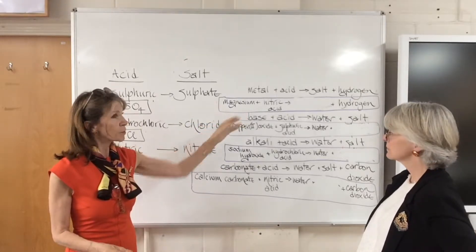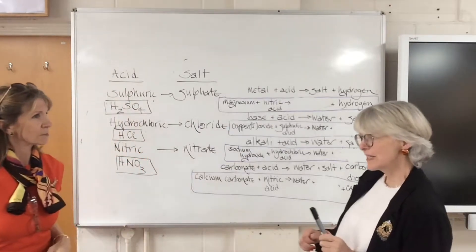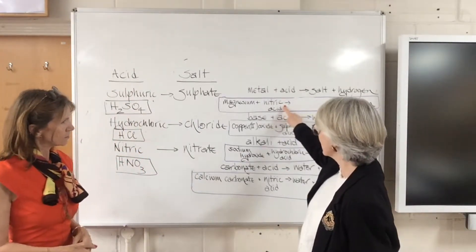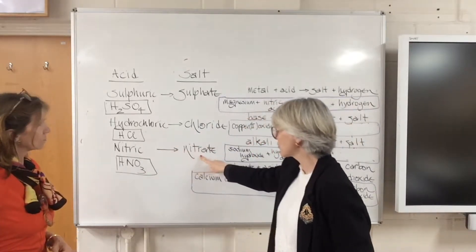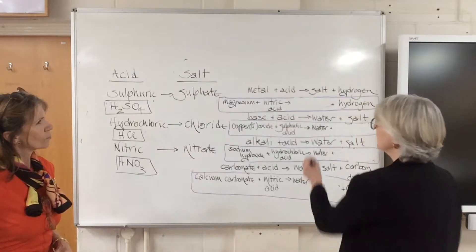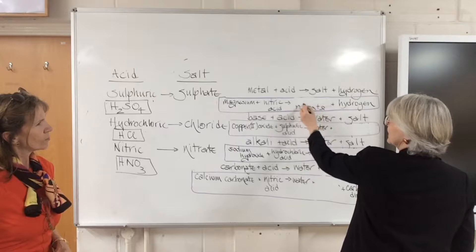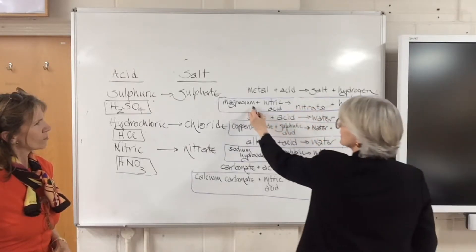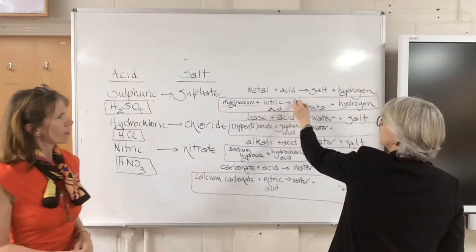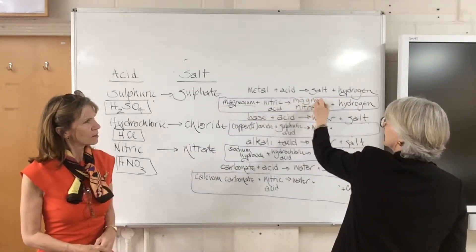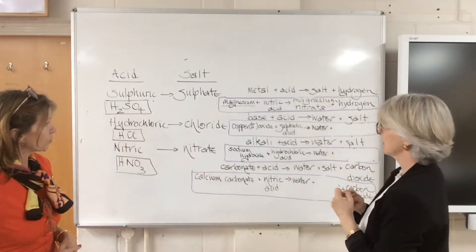To work out the name of the salt, look at the acid. The acid is nitric acid — nitric acid makes nitrate salts, so it must be a nitrate. For the beginning of the salt name I need the metal, which is magnesium, so it must be magnesium nitrate.